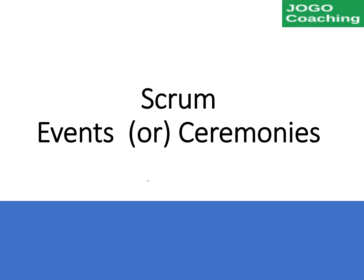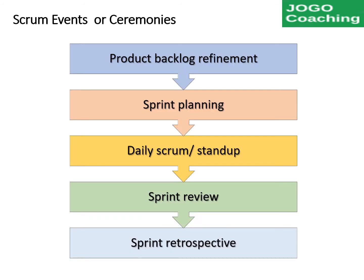Welcome. In this video I am going to explain about Scrum events, also called ceremonies. There are five events recommended in Scrum. Backlog refinement is a regular activity outside the sprint cycle. The remaining four activities — sprint planning, daily scrum meeting, sprint review, and sprint retrospective — will be part of each of the sprint cycles.